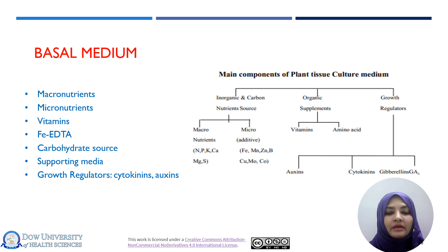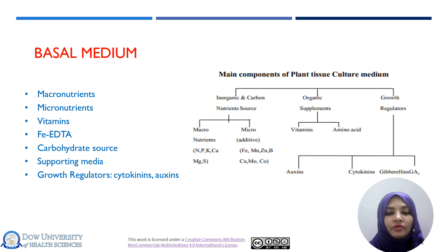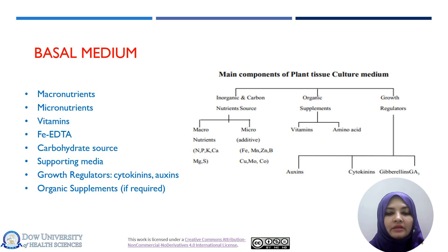These plant growth regulators can be varied as per requirement — for shoot induction, cytokinin is used in higher concentration, and for root induction and callus induction, auxin is used in higher concentration. In most media, these plant growth regulators are used with some higher and some lower concentrations. Organic supplements such as coconut water can also be provided in the basal medium for good growth and proliferation of plant cell culture.